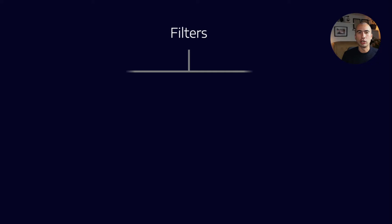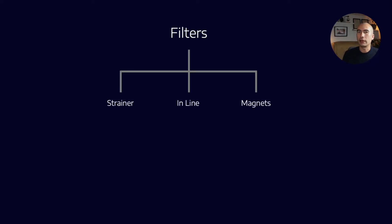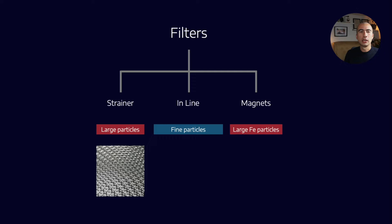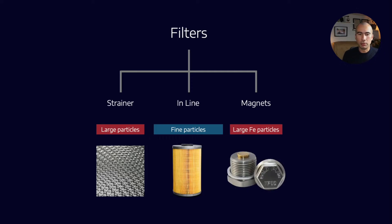Let's go back to filters in general. There are three different types which we can broadly categorize into strainers, inline filters, and magnets. Strainers are for large particles, magnets for ferrous particles, and inline filters are for what we call fines or particulate matter. Strainers are basically just a mesh, then we've got proper inline filters with some kind of filter media, and then we've got magnets.